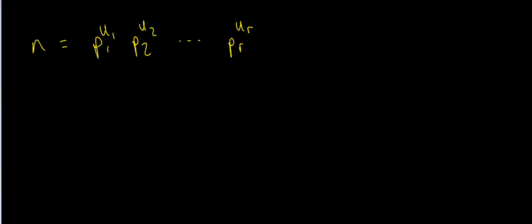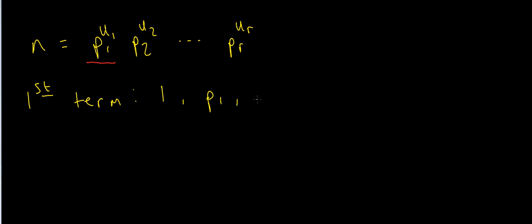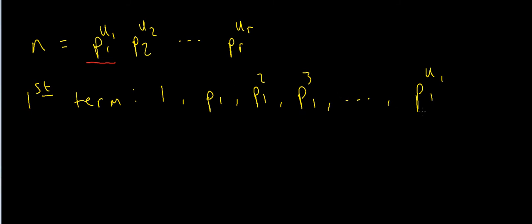If I look at the first term, what are the possible choices for what it could be? Remember n has some arbitrary prime factorisation. The first term could be 1, or p1, or p1 squared, or p1 cubed, or any power of p1 all the way up to p1^u1. How many terms is that in total? We have 1 through u1, so there are u1+1 terms total.